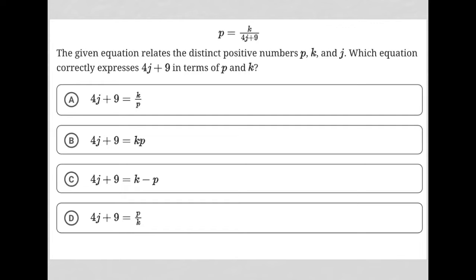This question starts off with the equation p equals k over 4j plus 9. It goes on to say: the given equation relates the distinct positive numbers p, k, and j. Which equation correctly expresses 4j plus 9 in terms of p and k?